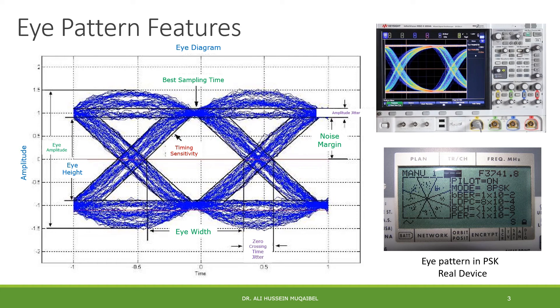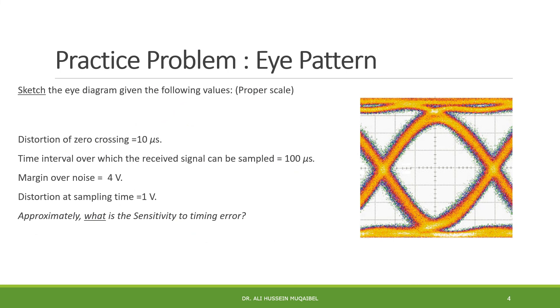Now let's do this practice for the eye pattern. It says sketch the eye diagram given the following values with proper scale. We have this diagram; we need to show the values. The distortion of zero crossing equal to 10 microseconds. It's a time axis. You can sketch it here or here. Now, the timing interval over which the received signal can be sampled, 100 microseconds. Again, it's across the time axis. And then it says noise margin, that's what we have here, 4 volts.